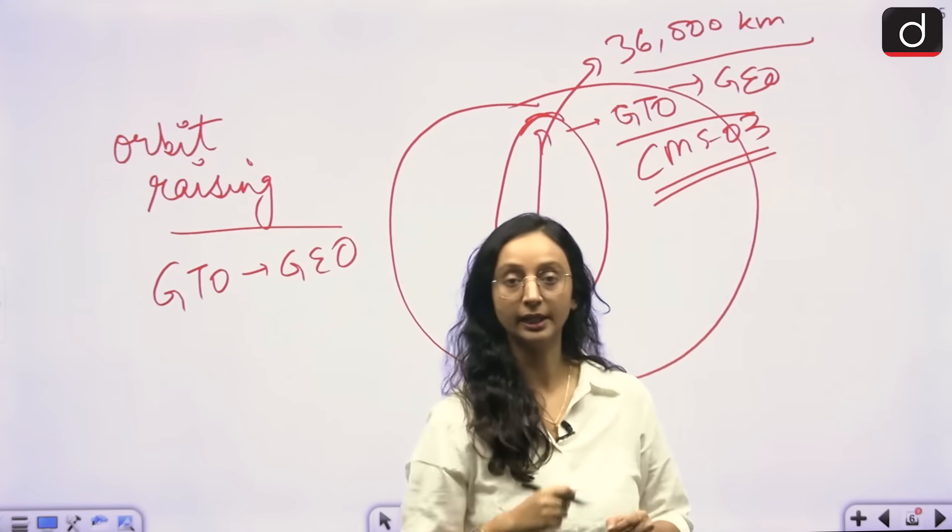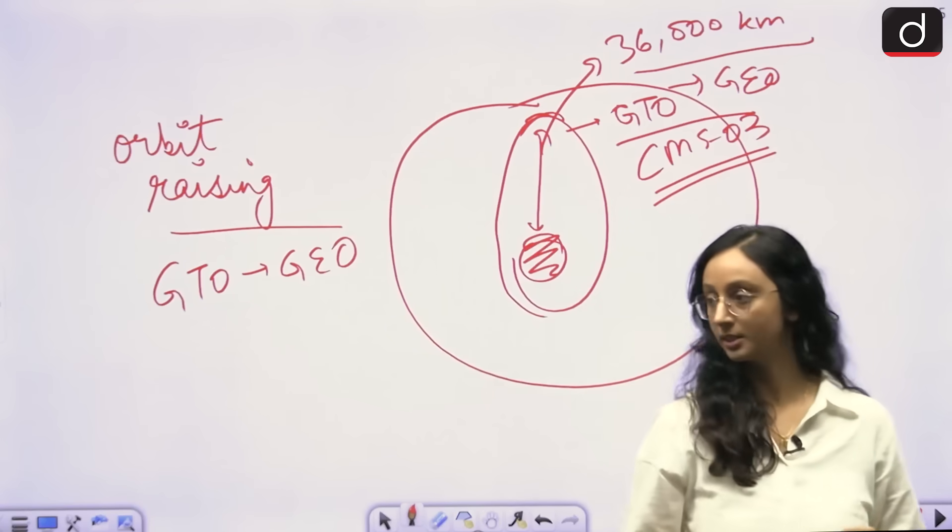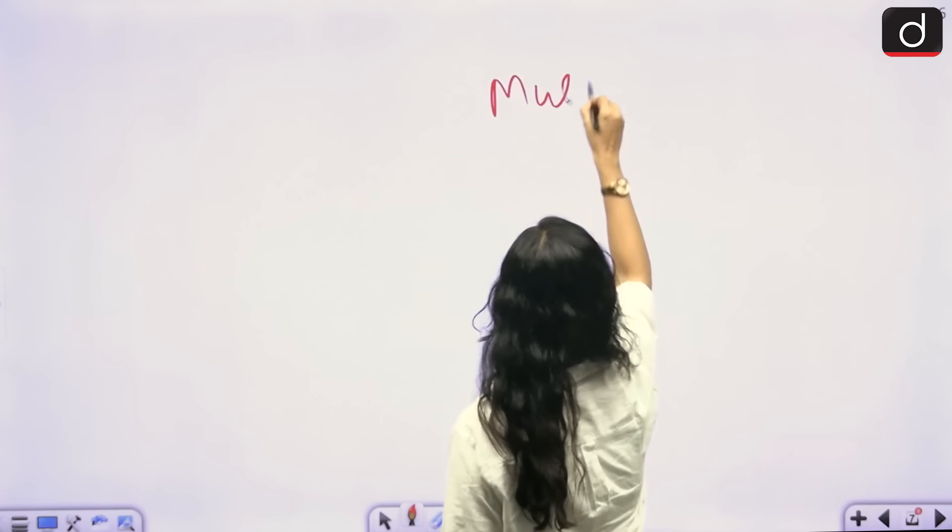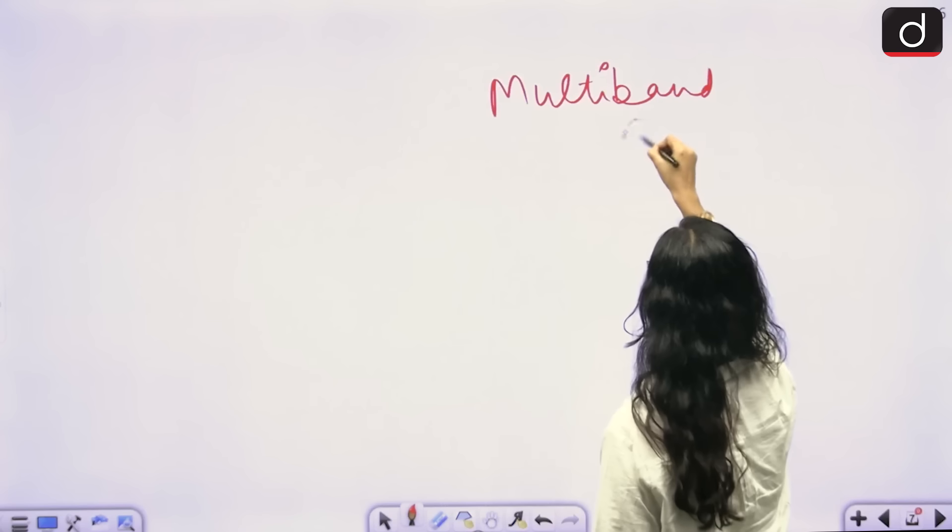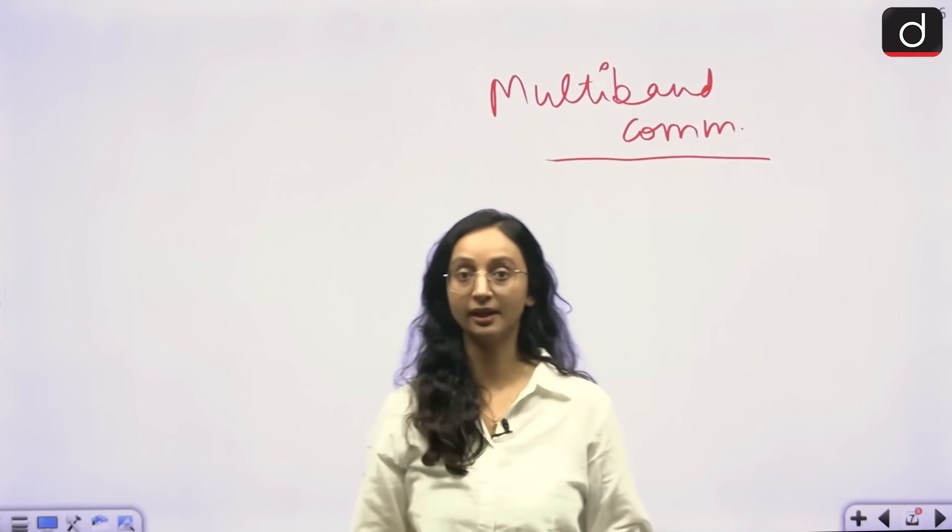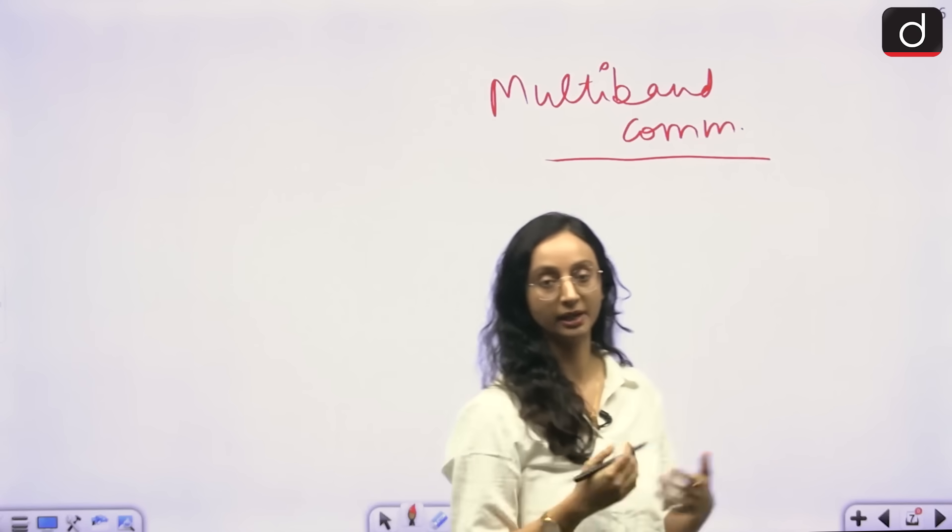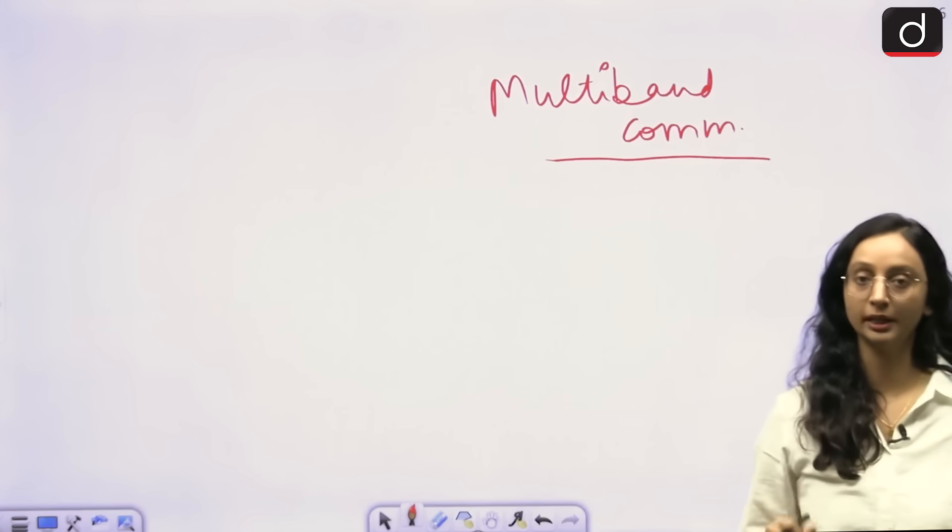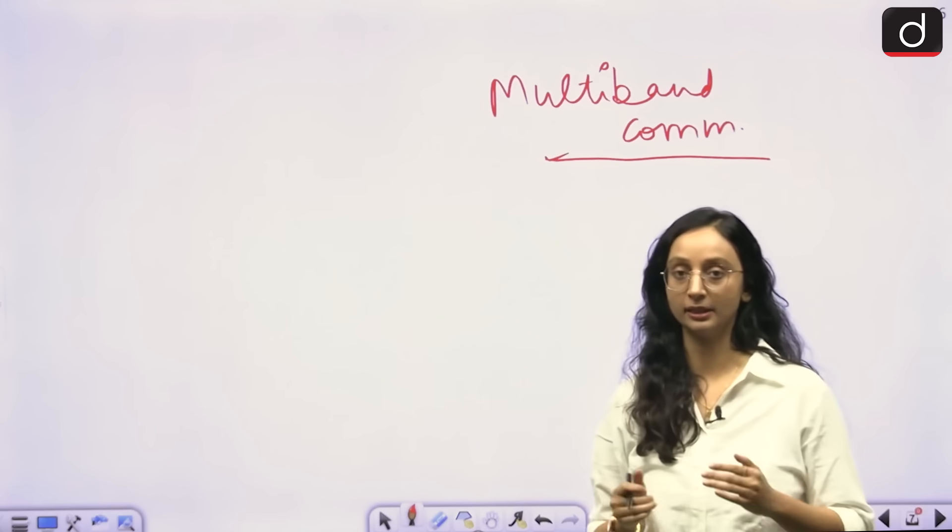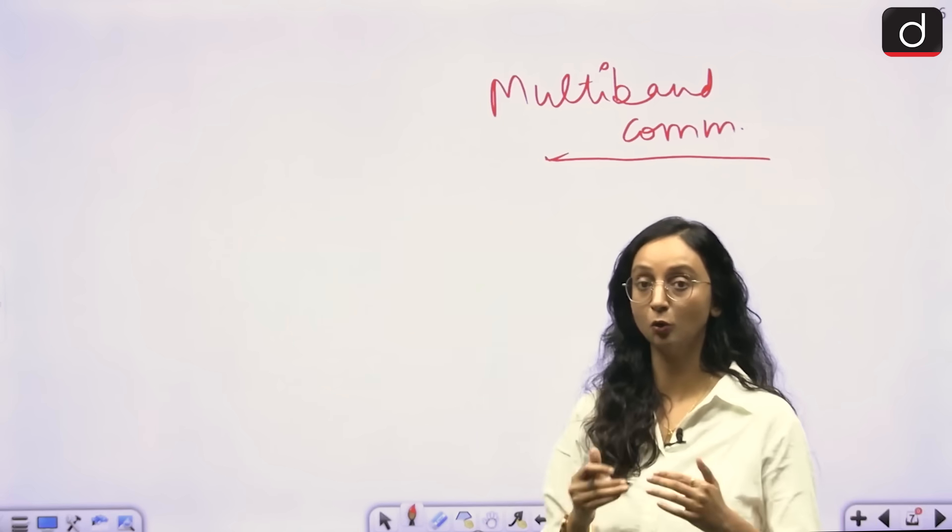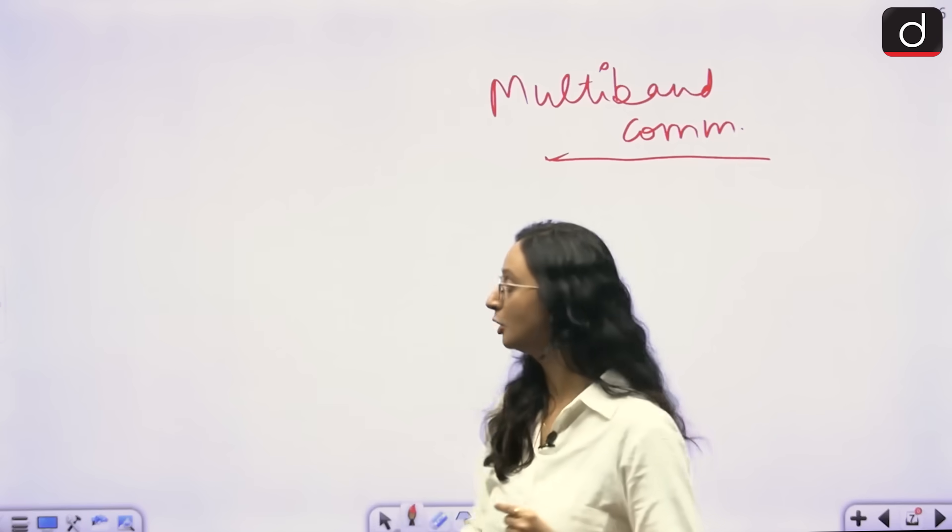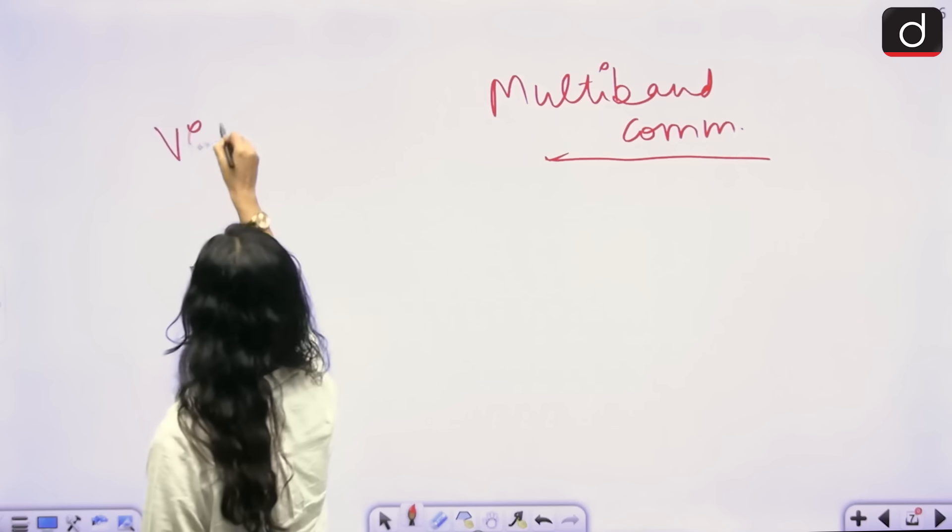Now CMS-03 in particular becomes important because this is a multi-band communication satellite. And this satellite is also going to be used heavily by the Indian Navy for its maritime operations, maritime communications over the Indian Ocean region. Multi-band communication satellite basically means that a satellite is able to operate through multiple bands or multiple frequencies, which means that it becomes more and more versatile.